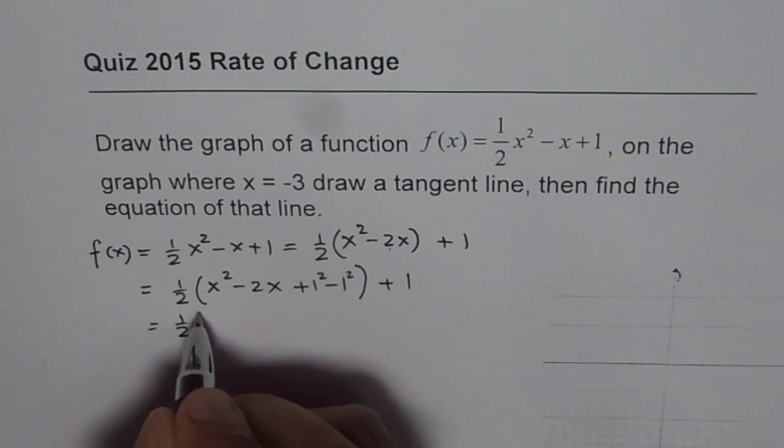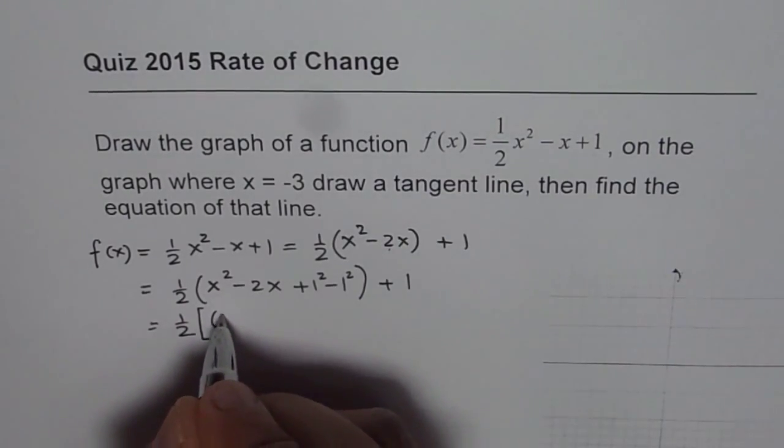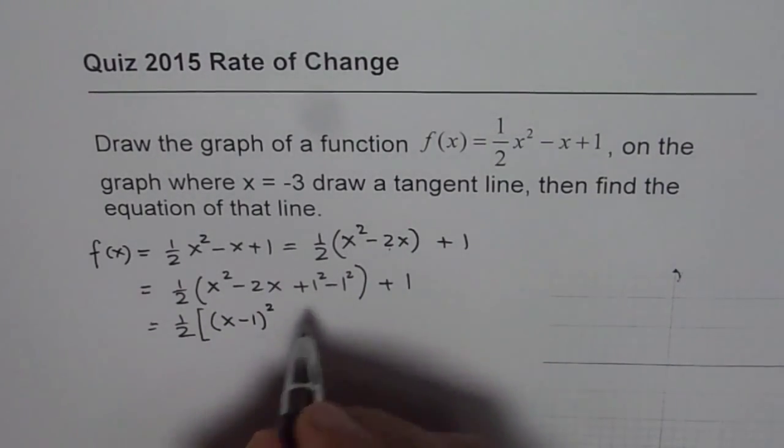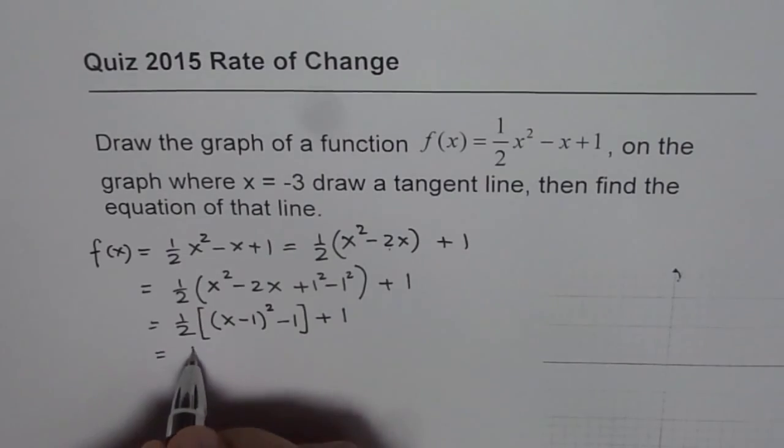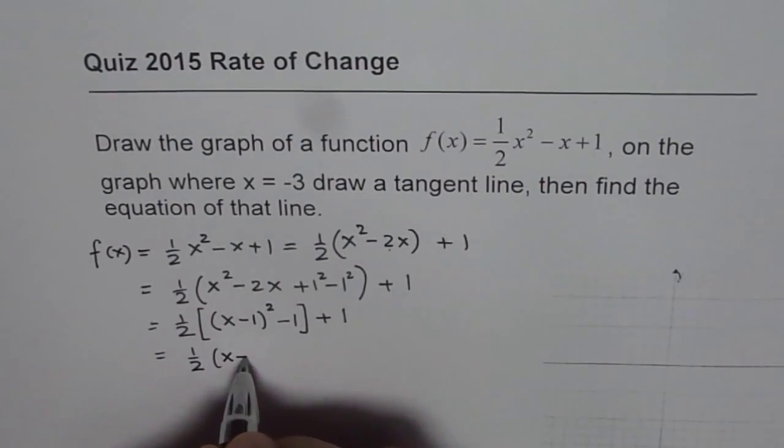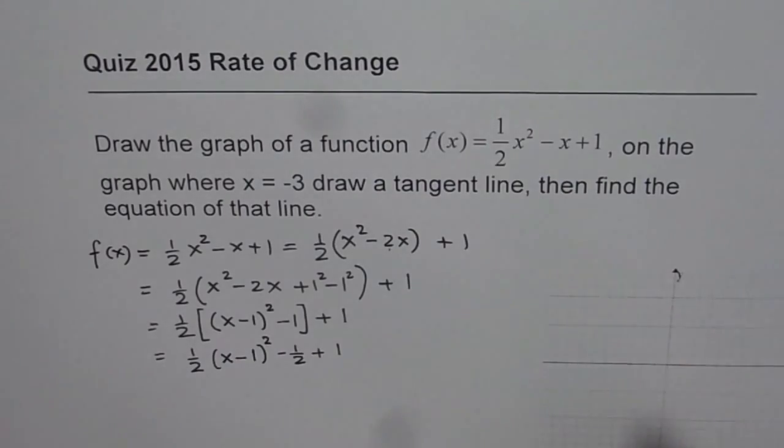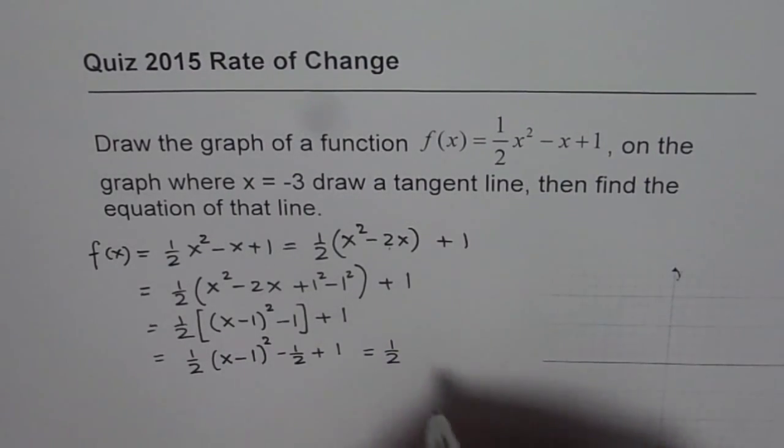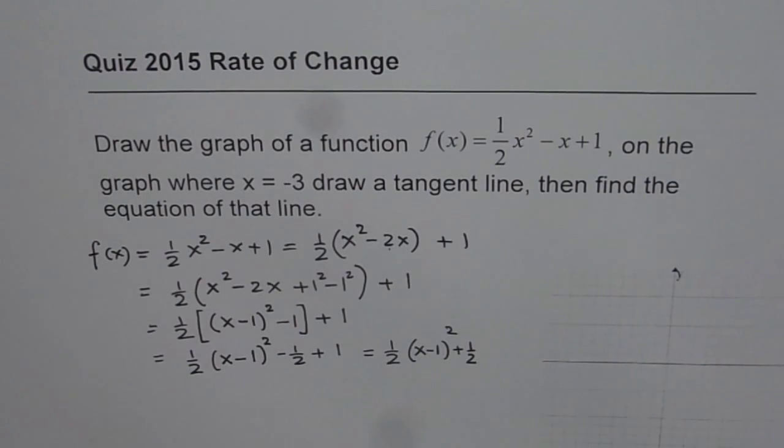This could be written as 1/2 of, let me use square brackets, first three terms will make a perfect square, which is (x minus 1)², right? We have minus 1 there, plus 1, and that gives you 1/2(x minus 1)² minus 1/2 plus 1. And that is 1/2(x minus 1)² plus 1/2. So that is the parabola in vertex form.